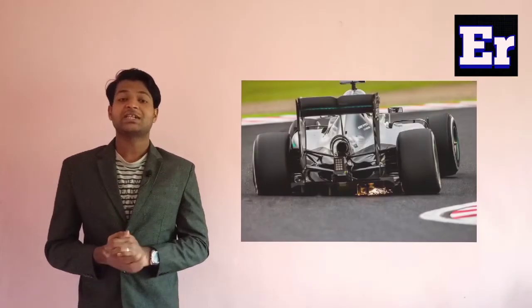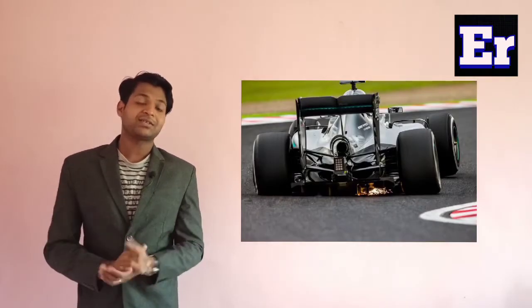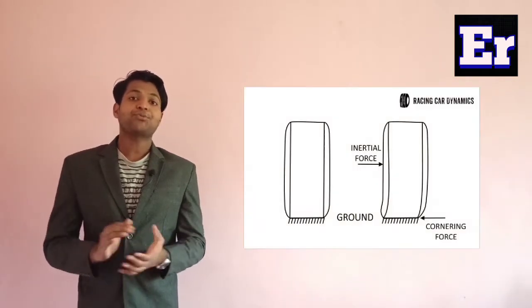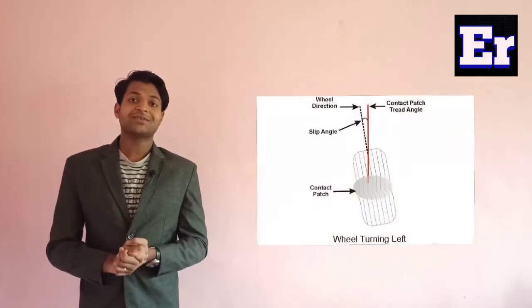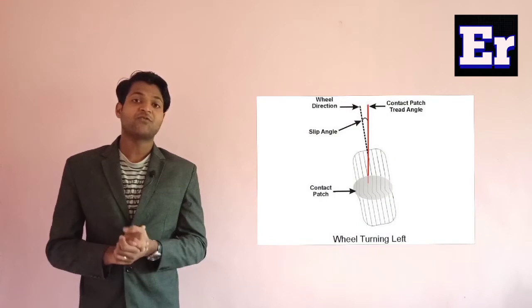Hello friends and welcome to my channel. In this video I'm going to talk about the steady-state characteristics of a two-axle vehicle. Consider a vehicle that is taking a turn. We know that while negotiating a corner, there will be a side force acting laterally on the vehicle. For balancing this side force, we need an appropriate cornering force in the contact patch of each tire, and this cornering force will result in slip angles in each of the four tires.